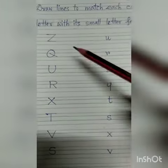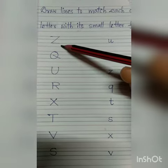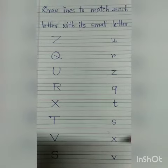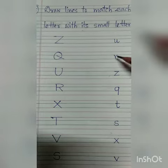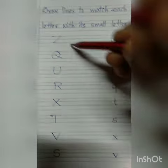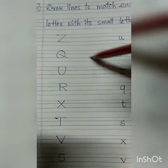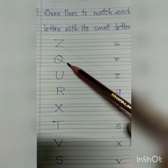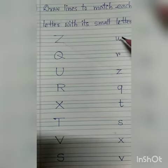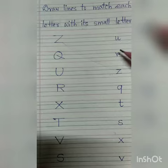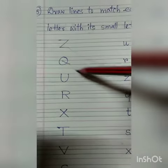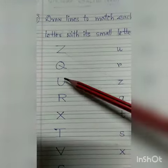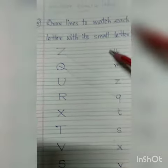Let us start. This is capital letter Z, and where is small letter Z? This is small letter U, this is small letter R, this is small letter Z. So you have to match it like this. Now Q — this is capital letter Q. Where is small letter Q? This is small letter Q. You have to match it like this. This is capital U and this is small letter U, so you have to match it like this.